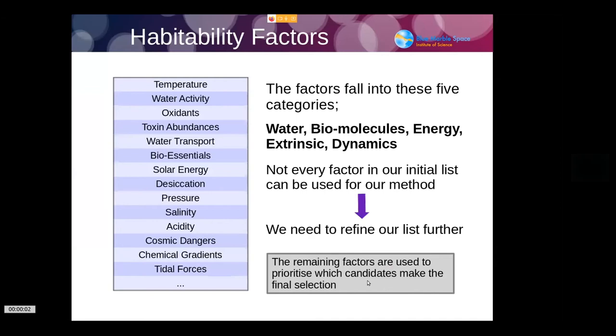Speaking of the factors that we actually accumulated, our research gave us this very long list—this 20-plus list of really important, essential minimum requirements needed for life. These fell into five important categories: water, biomolecules, energy, and also the extrinsic factors of the environment and the dynamics, like temperature fluctuation and tidal forces. But unfortunately, not all those things are very easy to quantify and to ascribe a particular number to, so we needed to refine our list.